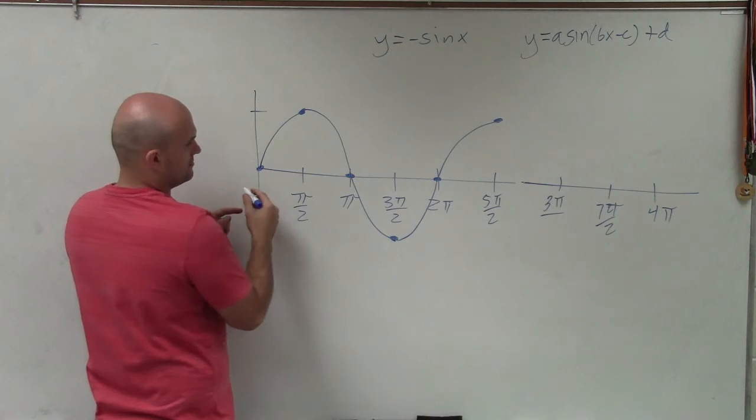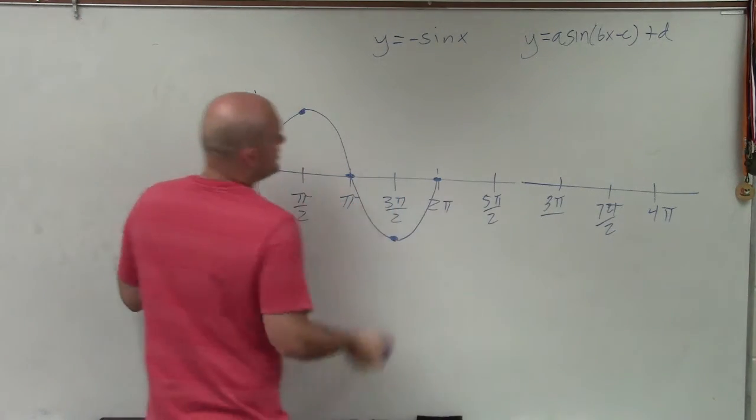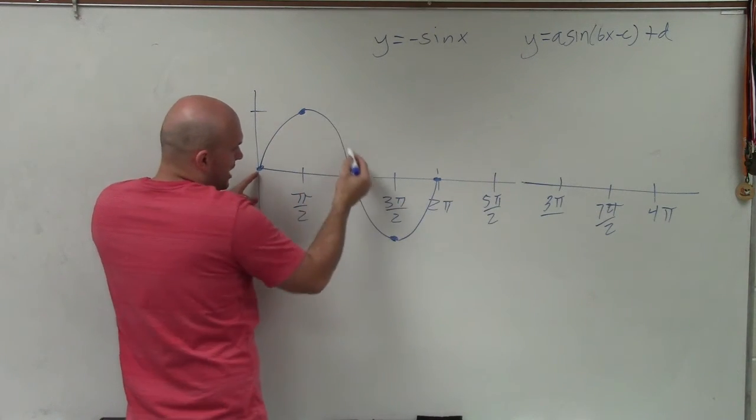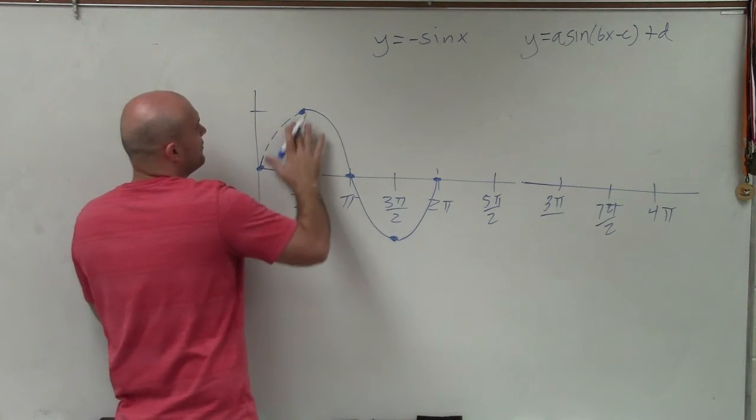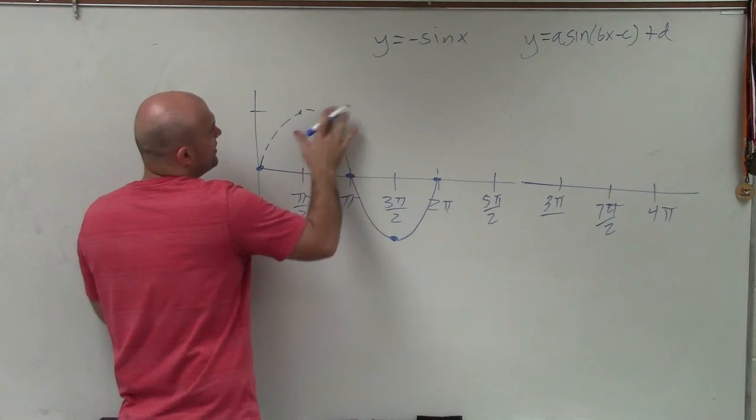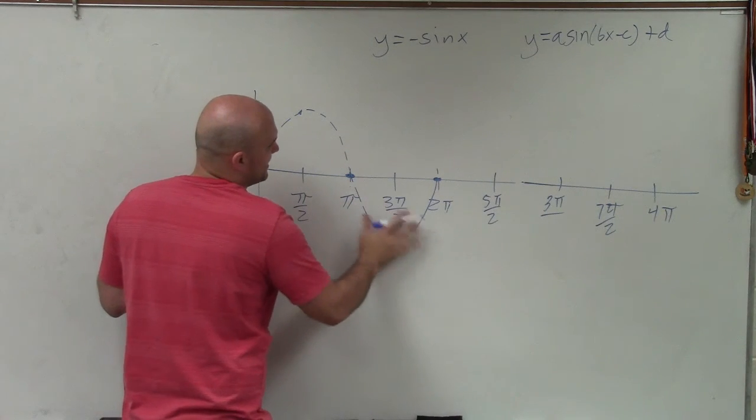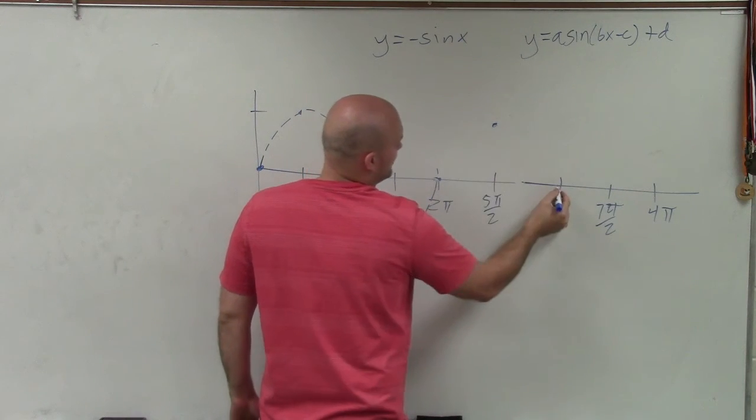You can see now, here is one period's worth, right? So it started here, went up, went down, and then now completed one period. Now remember, we aren't graphing sine. We will actually need to graph negative sine of x. So I'm going to make sure this is dotted, but I'm going to continue my pattern here.